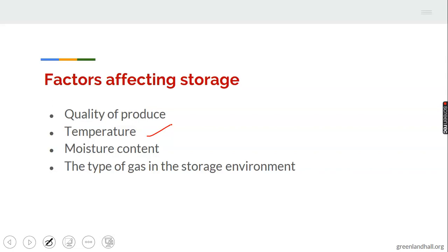For example, fish is meant to be stored in a refrigerator at a very low or cold temperature — if exposed to high temperature, it will definitely get spoiled. So temperature determines to a very large extent how to store your produce. Number three: moisture content. Most agricultural produce contains a percentage of water, and some produce require that the water or moisture content be reduced before storage, otherwise it will get spoiled. Number four: the type of gas in the storage environment. These are the factors affecting storage — quality of produce, temperature, moisture content, and types of gas in the storage environment.